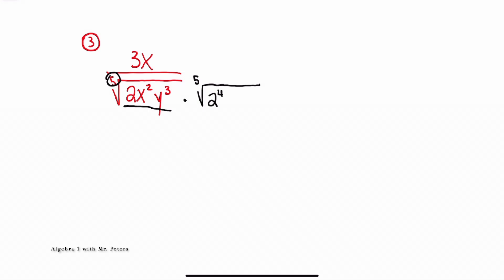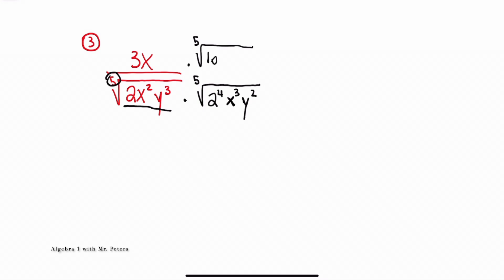When we combine those two exponents we'll get 2 to the 5th, and then we'll be able to simplify. When we go to x squared, I'd have to multiply by x to the third to be able to pull out that fifth root. And for y to the third power, we're going to put y squared. When we go to the numerator, we keep that very same expression but simplify 2 to the 4th power as 16. So we have 16x to the third y squared. In the numerator, everything stays the same: 3x times the fifth root of 16x to the third y squared.